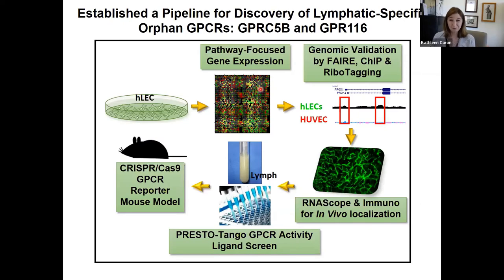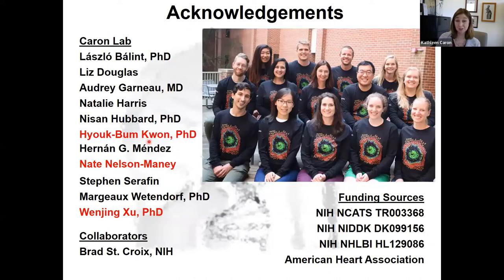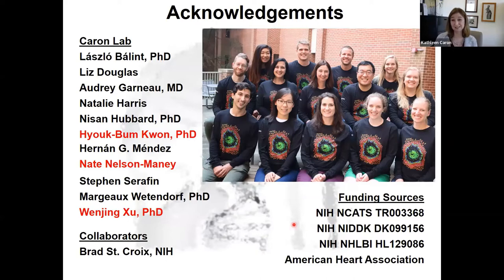That's the summary of our findings on GPRC5b and GPR116. Ultimately we would love to identify the ligands for these receptors, and we've proposed studies looking at lymph as a potential candidate biological fluid for potential ligands. We're moving forward with additional reporter lines and gene-specific knockout lines. I'd like to acknowledge Heupbong Kwon, responsible for the elegant zebrafish studies, and talented postdoc Wenjing Xu, with help from Nate Nelson-Manny. None of this could have happened without the generous funding of NCATS and the R03 that supported this work. Thanks for your attention — I look forward to questions.